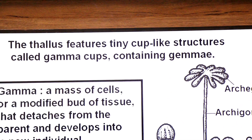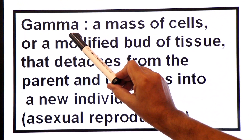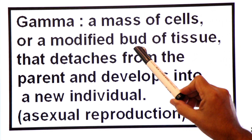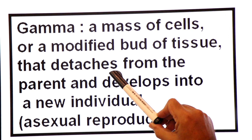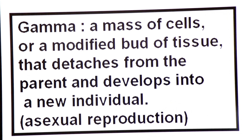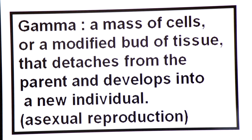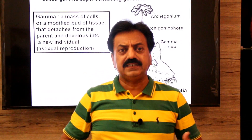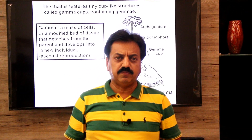A gemma is a modified bud of tissue that detaches and separates from the parent and develops into a new individual — this is asexual reproduction. So in liverworts, gemmae perform asexual reproduction.